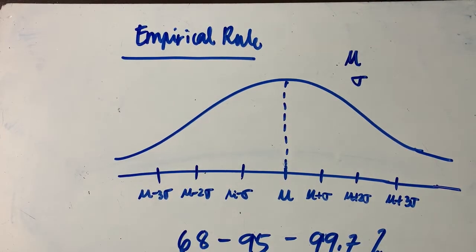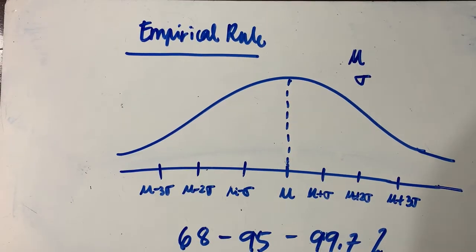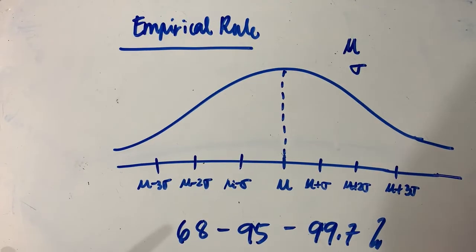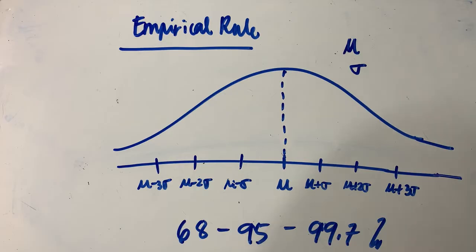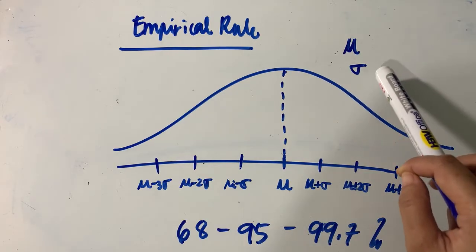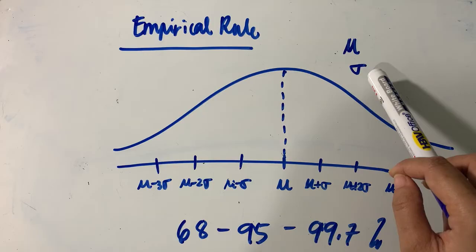Let us proceed to what we refer to as the empirical rule, also referred to as the 68-95-99.7% rule. Now here, we may take our data coming from the population, in which case we will consider the population mean and standard deviation, or mu and sigma.